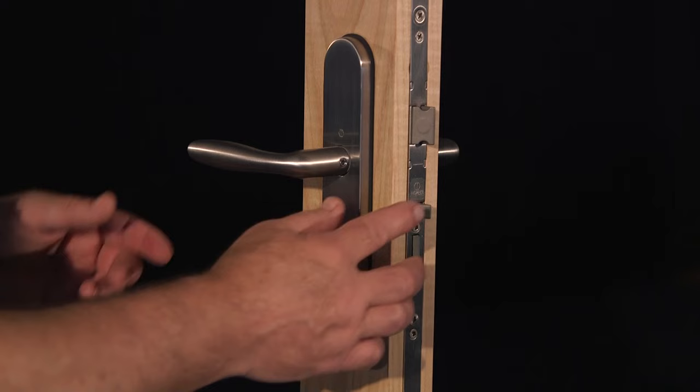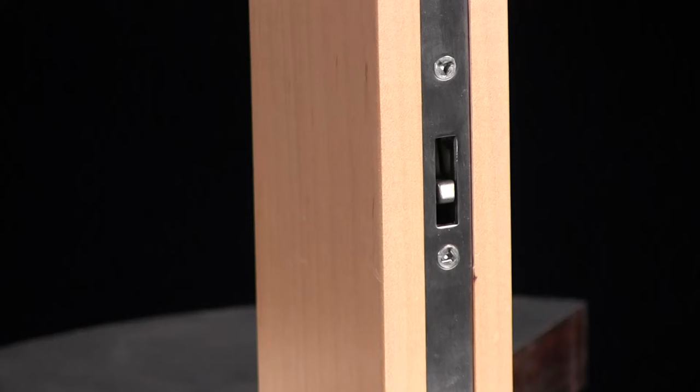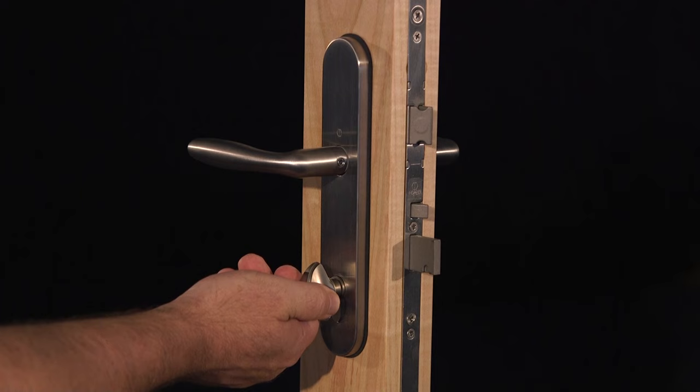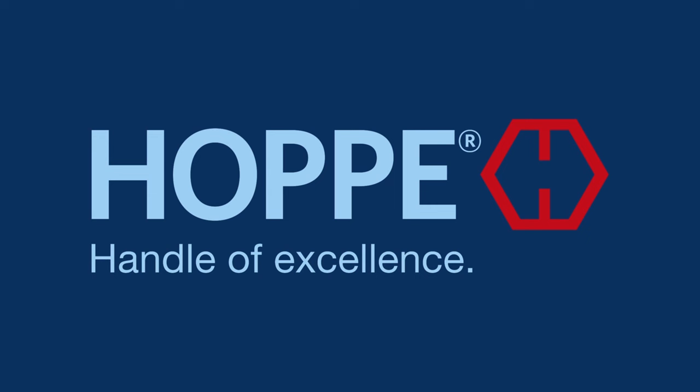After the cylinder installation, once again test the unit by depressing the mishandling device. Confirm the proper functioning by lifting the handle to engage the multipoints and then extending and retracting the deadbolt with either the thumb turn or the key.